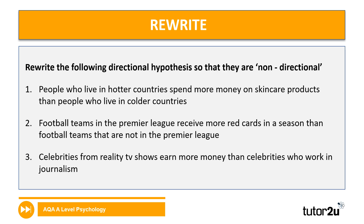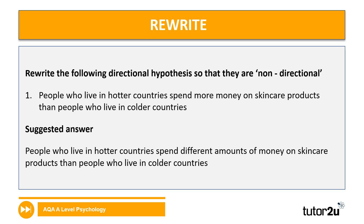Now we're going to switch it and do it the other way. You've got three hypotheses that are directional and you're going to change them into non-directional hypotheses. There's space in your booklet next to question five for you to have a go at this. We started with 'people who live in hotter countries spend more money on skin care products than people who live in colder countries,' and we're changing that to non-directional: 'people who live in hotter countries spend different amounts of money on skin care products than people who live in colder countries.' Or we could say 'there will be a difference in the amount of money spent on skin care between hotter countries and colder countries.'